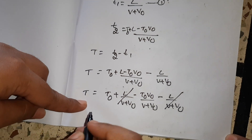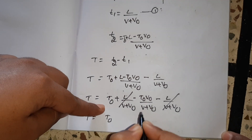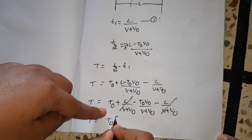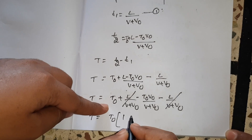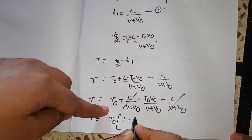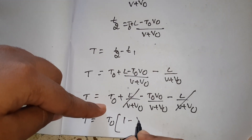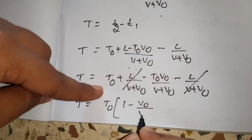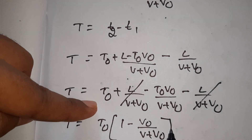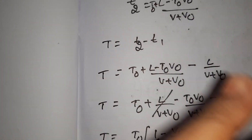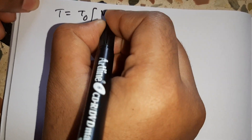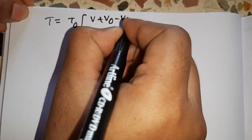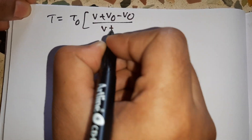If you cancel the L by V plus V0 terms, T is equal to T0 minus T0 V0 by V plus V0.